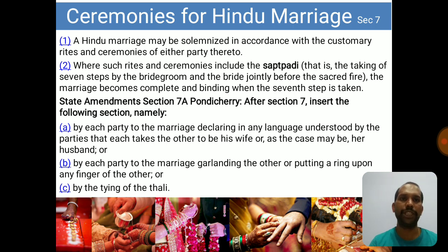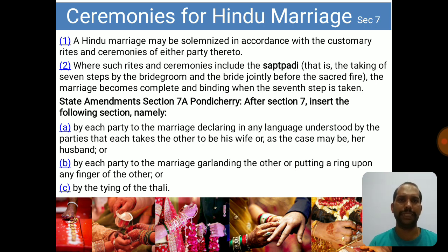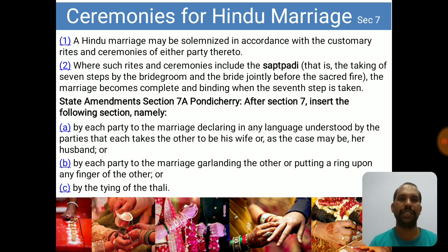There is a state amendment — Section 7A, Pondicherry — which inserts the following: a marriage may be solemnized by each party declaring in any language understood by both parties that each takes the other as his wife or her husband. This addresses consent — both parties must declare in a mutually understood language. Additionally, the ceremony may be performed by each party garlanding the other, or by putting a ring upon any finger of the other, or by the tying of the tali — what is called mangalsutra in Hindi — which makes the marriage valid.